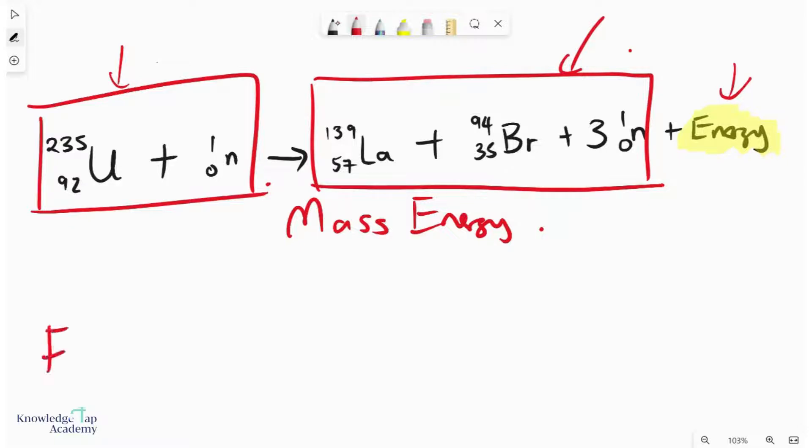And so in summary, the energy released is simply equal to the total mass of the reactants minus the total mass of the products.